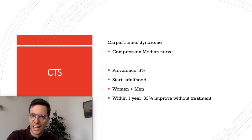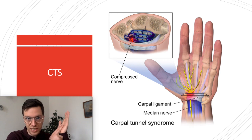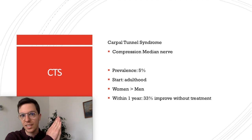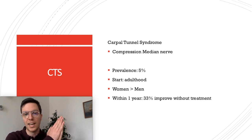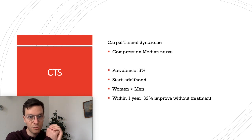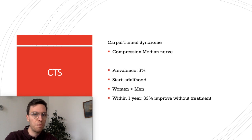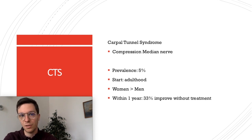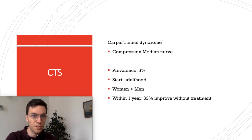Welcome to the slides on carpal tunnel syndrome, or CTS. Carpal tunnel syndrome is basically caused by compression of your median nerve at the palm of your hand. The prevalence is 5% — meaning 5% of all people will develop carpal tunnel syndrome in their lifetime. It usually starts in adulthood and it's more common in women than males. Also, of all the people who develop carpal tunnel syndrome, 33% will have improved symptoms without any kind of treatment within a year, which is an important feature.